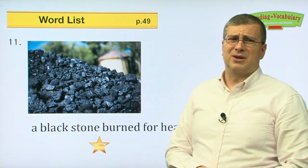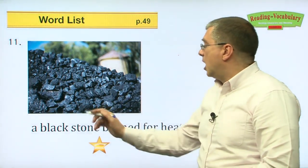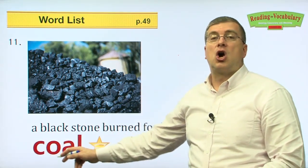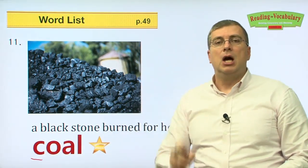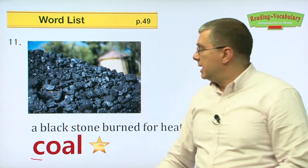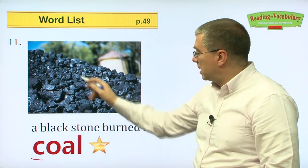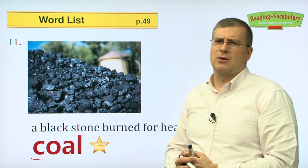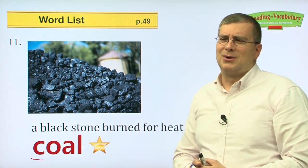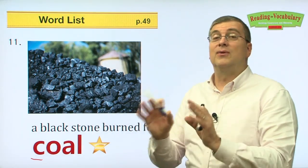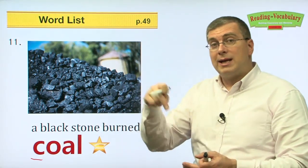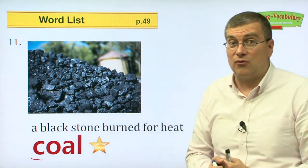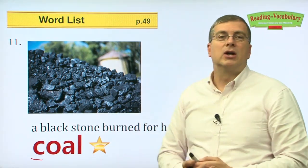Number eleven. A black stone burned for heat — what do we call it? We call it coal. C is a hard K sound: coal. Coal is a black stone like we see in this picture, and we burn it for heat. If you go to a bulgogi restaurant where they have an outdoor barbecue, they put coal in the fire underneath and burn it. That's an example of coal you can see every day. Coal is very important for our modern life.